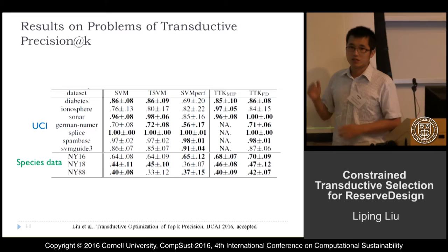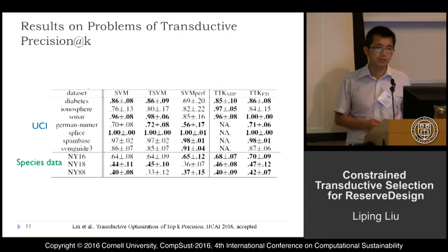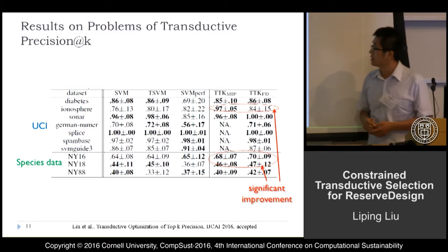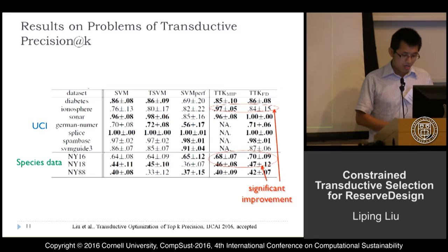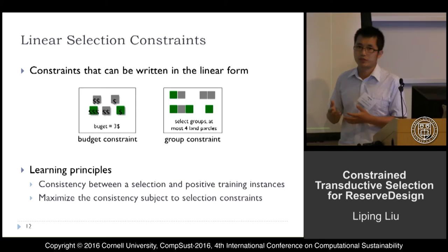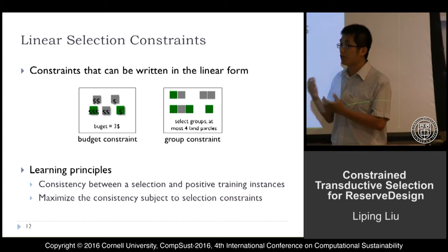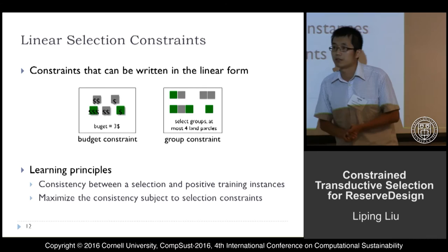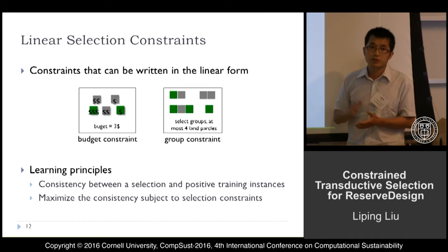This is the performance of our TTK method for the transductive precision-at-k problem. We used seven UCI datasets and three species datasets, and we can see significant improvement on three datasets. Then, going back to the general constraint transductive selection problem, we can have more complex selection constraints. In linear form, for example, we can write a budget constraint or a group constraint, where we can only select groups and select at most a certain number of land parcels.